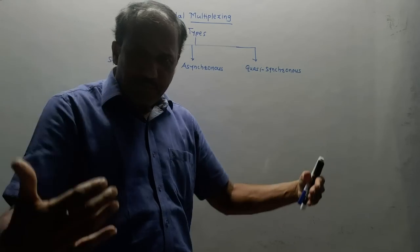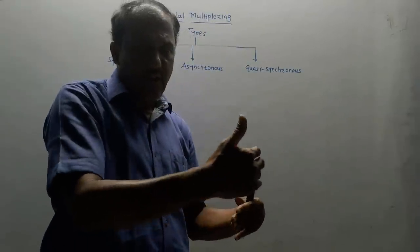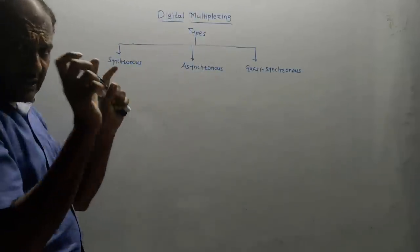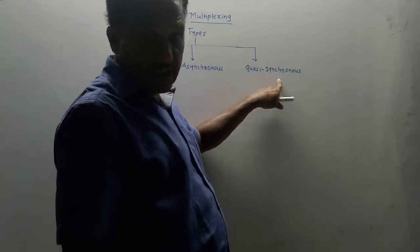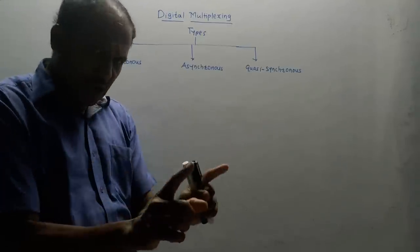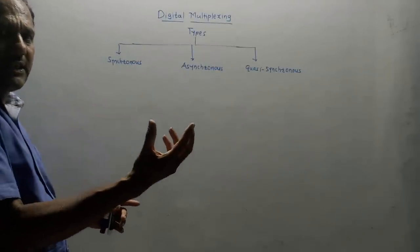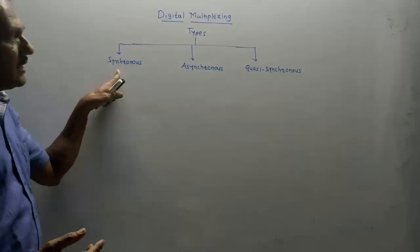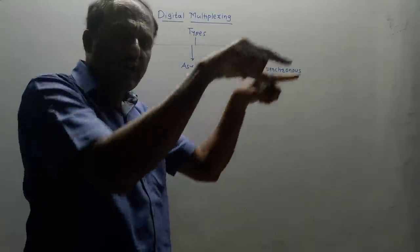Bit rate means the number of bits transmitted per second. If each source has a different bit rate, there could be a problem in synchronization. Depending on the concept of bit rate, there are different types: first is synchronous, second is asynchronous, and third is quasi-synchronous. Synchronous means we provide every source with the same master clock, so every source operates at the same bit rate — there is no variation in bit rate, and this is called synchronous digital multiplexing.